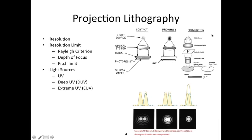There is another type called projection lithography. In projection lithography, you make a mask that is actually larger than what you want to print. In the previous methods, a 5-micrometer feature on the mask prints a 5-micrometer feature. But for 100 or 200 nanometer features, making a 100-nanometer mask is very difficult and expensive.